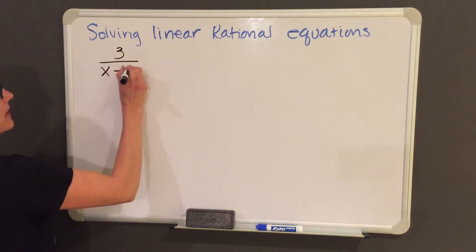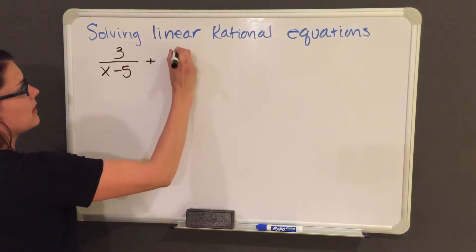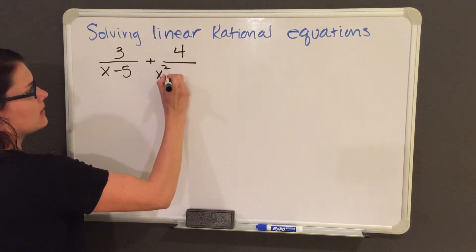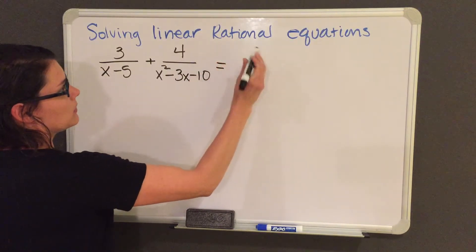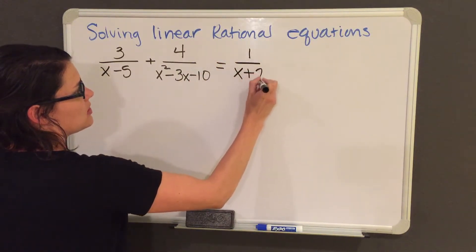Let's look at this example. 3 over x minus 5 plus 4 over x squared minus 3x minus 10 equals 1 over x plus 2.